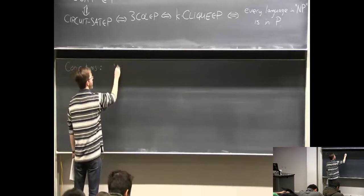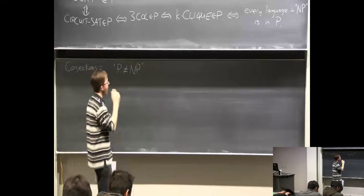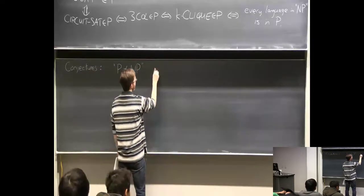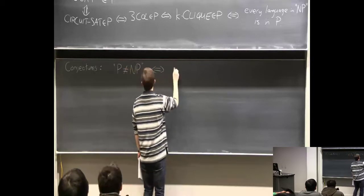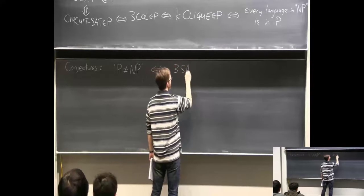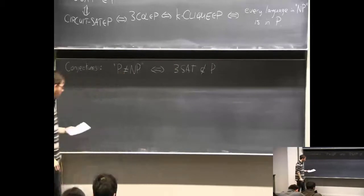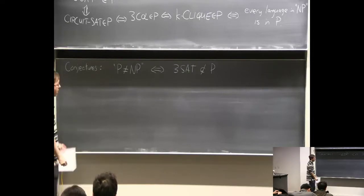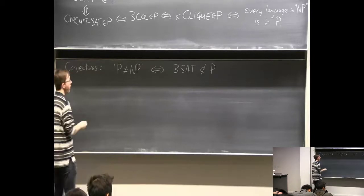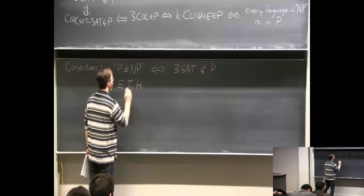The most famous conjecture is called P does not equal NP. Although it's not the definition of 'P does not equal NP', this is equivalent to the conjecture that 3SAT cannot be solved in polynomial time. But we don't even know how to solve it in 2^{n^{0.99}} time, and you can conjecture that that's also impossible.